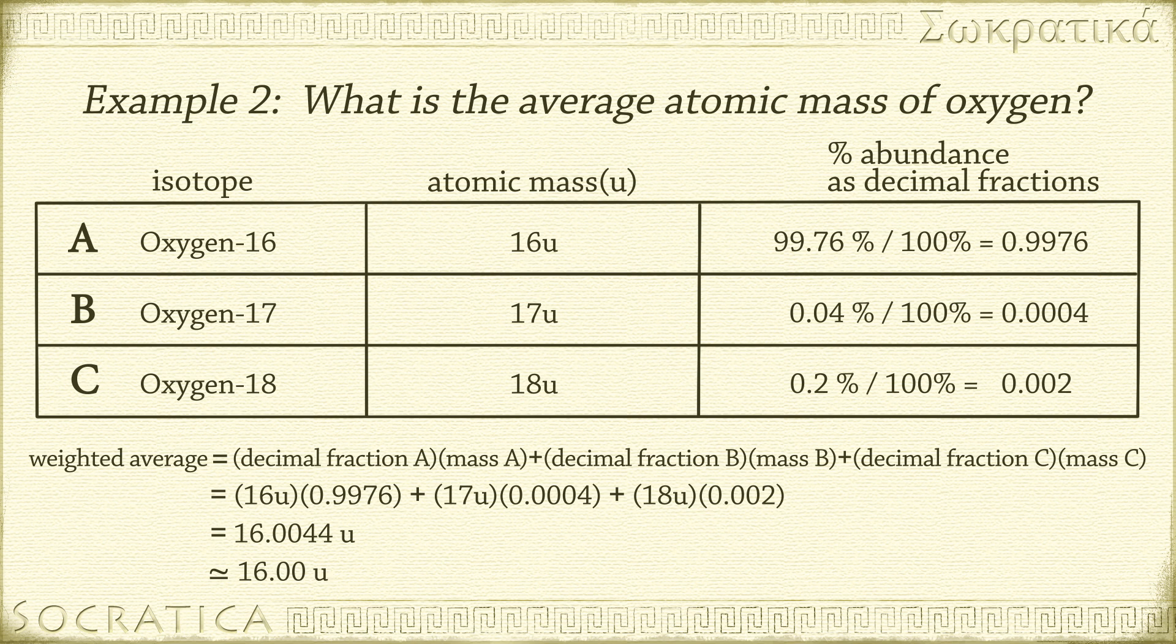You may get a slightly different answer, depending on how many decimal places you have in your percent abundances measurement. Check your answer to see if it passes the smell test. You know that the most common isotope, by far, is oxygen-16, so the average atomic mass should be really close to 16u. And it is.